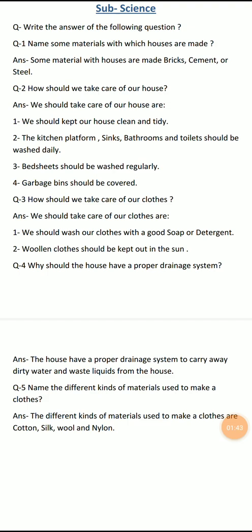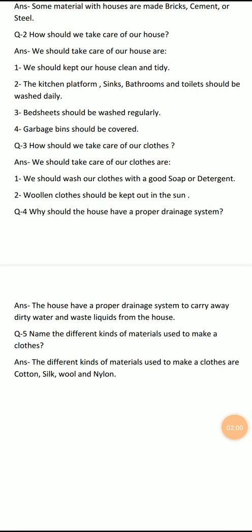And the fifth question is: name the different kinds of material used to make clothes. So the answer of this question is: the different kinds of material used to make clothes are cotton, silk, wool, and nylon.